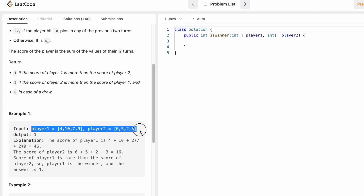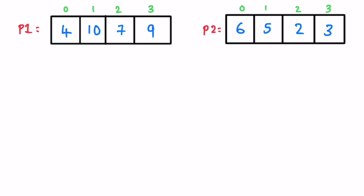Now let's take a look at an example — the same one given to us. This is the p1 array and this is the p2 array representing the scores of the two players. Since the process for calculating scores for both arrays is the same, we can write a general function that iterates through any array and calculates its score, accessing elements from left to right starting from index zero.